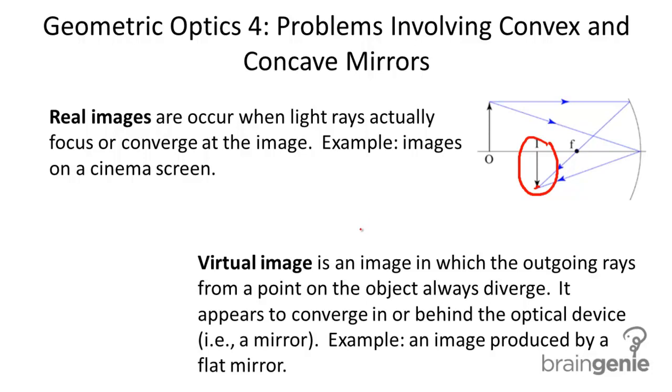That's why we call it a virtual image. If we look at an example with a concave mirror, first of all, the outgoing rays, these rays here, they diverge. In addition, the rays seem to converge in or behind the optical device. So any convergence is behind the optical device.